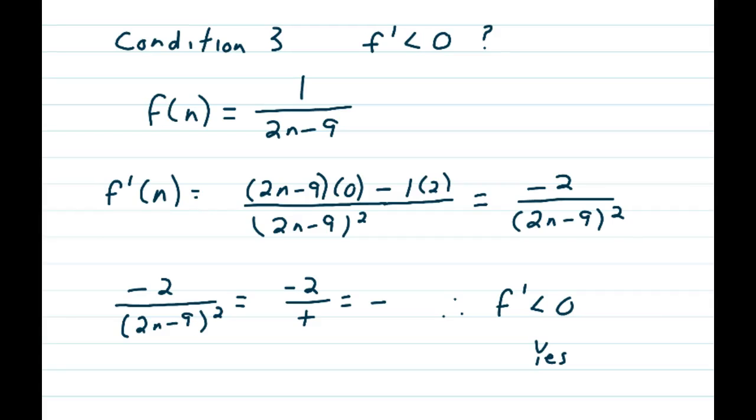And we take a look at it and say, well, negative 2 is always negative 2. And if we put any value of n into 2n minus 9 quantity squared, you're always going to get a positive. So that means negative 2 over positive is always negative, and therefore the derivative is less than 0. And this function has to be decreasing.